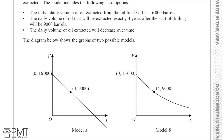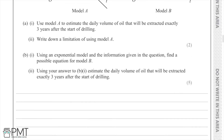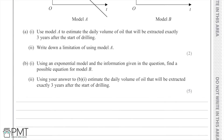Looking at Model A, we can see it is a straight line, while Model B has a curved fitted line. Question A Part 1 asks us to use Model A to estimate the daily volume of oil that will be extracted exactly three years after the start of drilling.